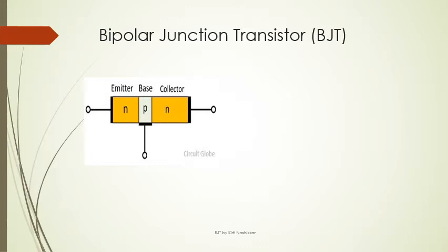There are two types of BJTs: NPN and PNP. In case of NPN, we have two N-type extrinsic semiconductors and between them a P-type extrinsic semiconductor is sandwiched. These are the three sections of the transistor: the first is known as the emitter, the middle one is the base, and the last one is the collector. As you can see in the diagram, the emitter has moderate size, base is very small, and collector has large size. The terminals taken out from these sections are denoted by E, B, and C.